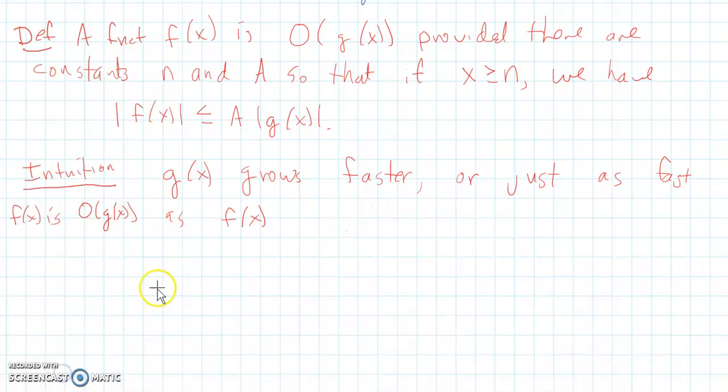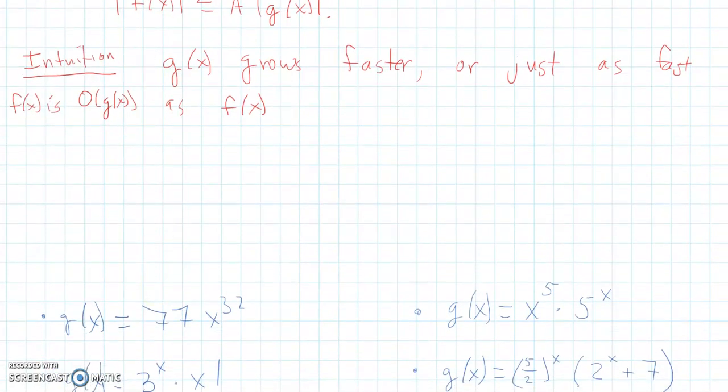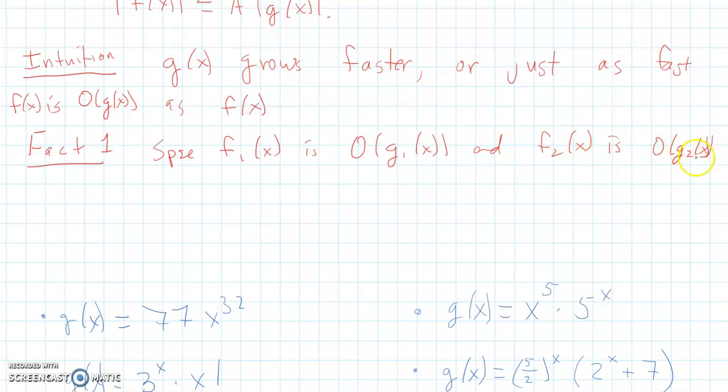The two facts that will be useful in doing these types of problems are ones that are in the book and in the notes, and I talked about them in that extra video that I posted. So fact one says the following. Suppose f1 of x is big O of g1 of x and f2 of x is big O of g2 of x. Actually, that's kind of the setup for both of the facts. So we're going to assume this is the assumption.